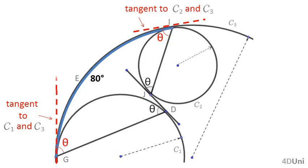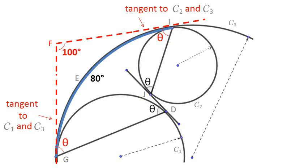We extend the two straight lines tangent to circumference C3 until their intersection point. Because the sum of the measure of the exterior angle just formed and the measure of arc GEI — which is 80 degrees — should be 180 degrees, the measure of the exterior angle is 100 degrees. What we have done is relate the unknown theta and the information given, the 80 degrees, with other values in the figure.